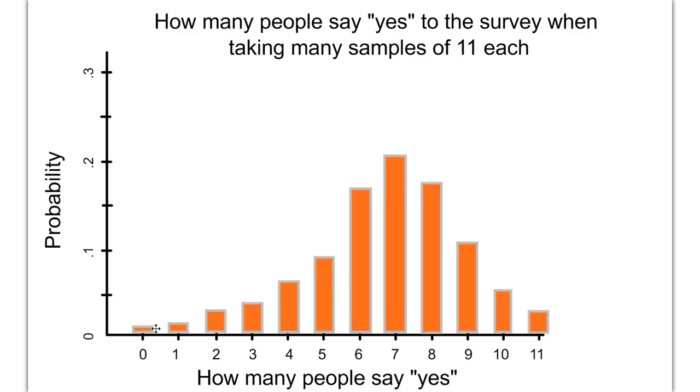Every so often, I'm going to get nobody who says yes, but that's not very likely. And every so often, I'm going to get 11 out of 11 that say yes, and that's not that likely either, but a little bit more than this end. And you can see that it starts to peak around 7, and 8 is a little higher than 6, so maybe the average is somewhere between 7 and 8.